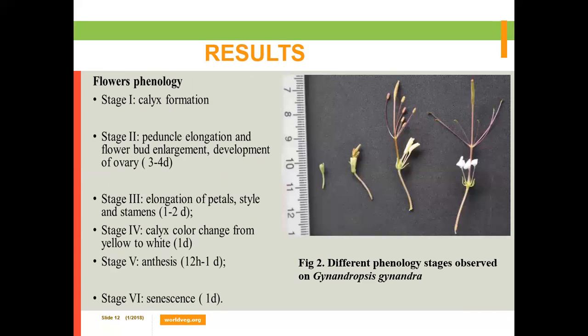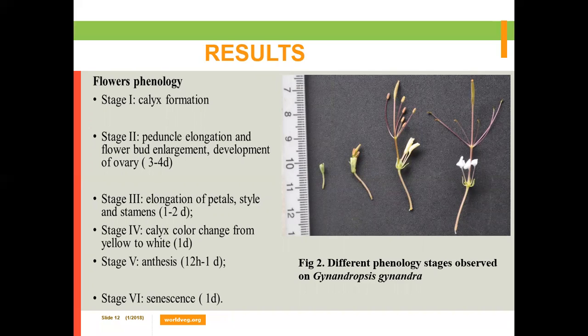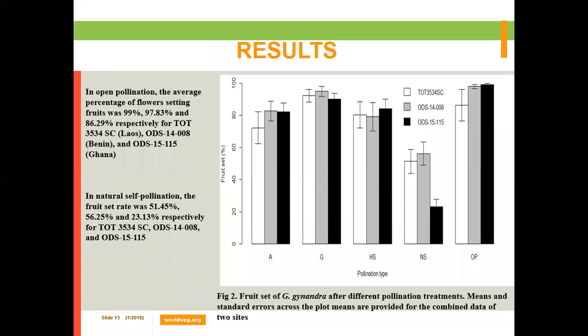We observed the different phenology phases from bud appearance to full flower opening in Gynandropsis gynandra, and identified six stages. Stage one: callus formation. Stage two: peduncle elongation and flower bud enlargement, with development of the ovary. Stage three: elongation of petals, style, and stamens. Stage four: the calyx changes color from yellow to white. Stage five: anthesis. Stage six: senescence. Between stage one and two: three to four days; stage two to three: one to two days; stage three to four: one day; stage four to five: twelve hours to one day; stage five to six: one day.